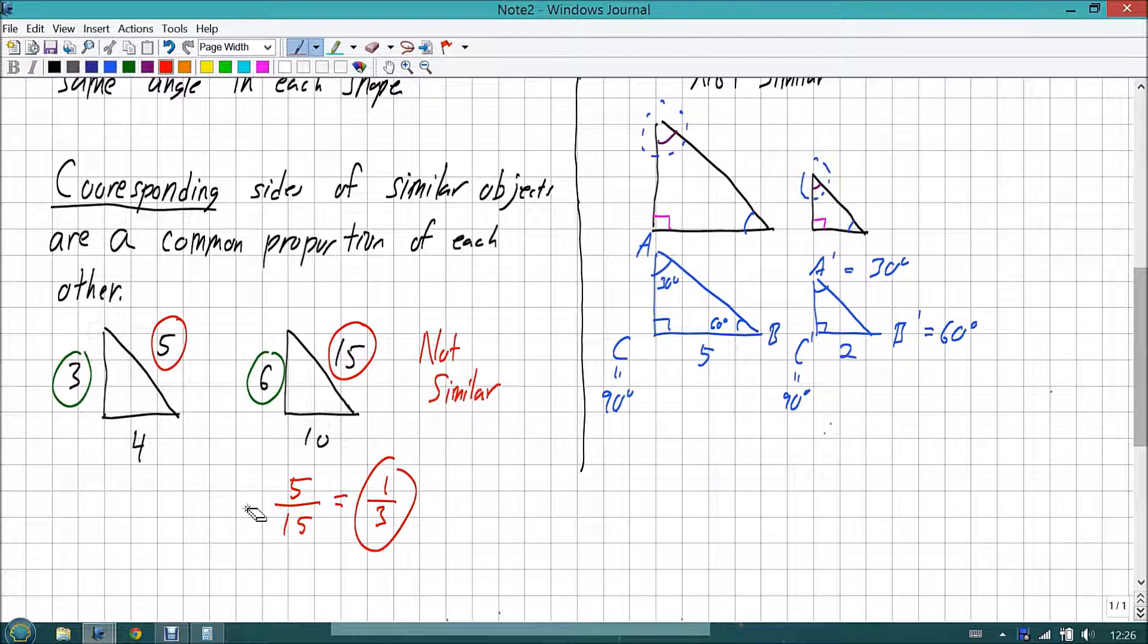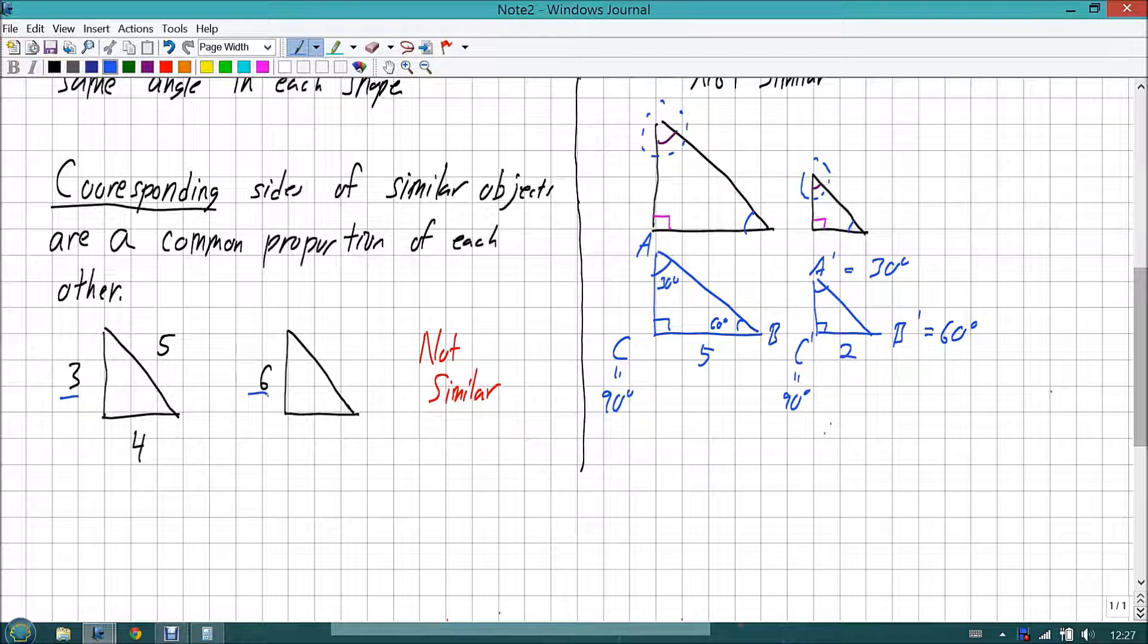What numbers would we have to have to make them similar? Well, I'm going to keep the 3, 4, 5 but I'm going to change the one on the right. So we have a ratio of 3 to 6. That has to be the ratio of my other two sides, y and x. So 3 to 6 has to be the same ratio as y to its corresponding side which is 4.